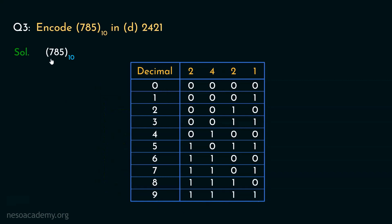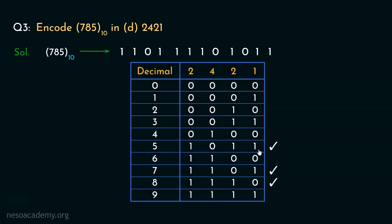Let's now determine the encoding for 785 in 2421. For 7, the pattern is 1101, so let's enlist that. Coming to the next digit 8, the pattern is 1110, we will enlist that too. Finally, for 5, the last digit, the pattern is 1011, so let's enlist that. So basically, the encoding of 785 in 2421 will be 1101 1110 1011.